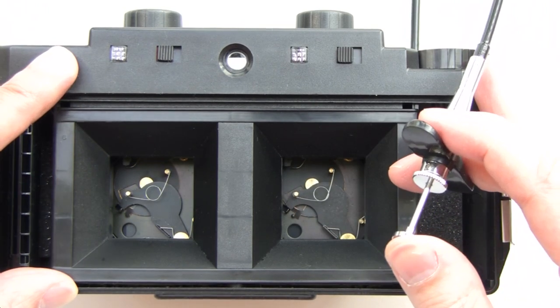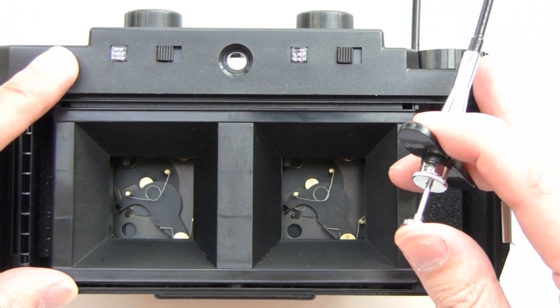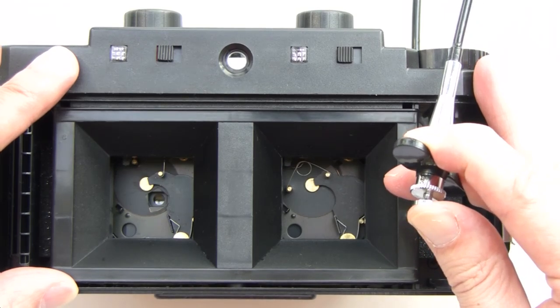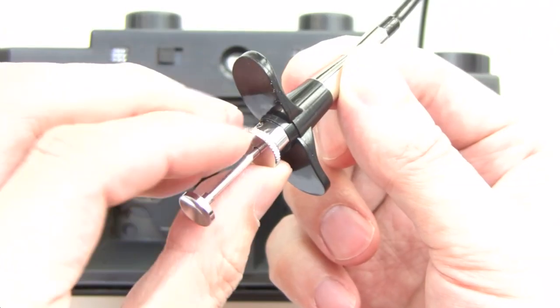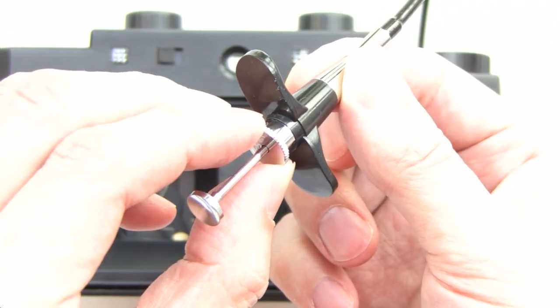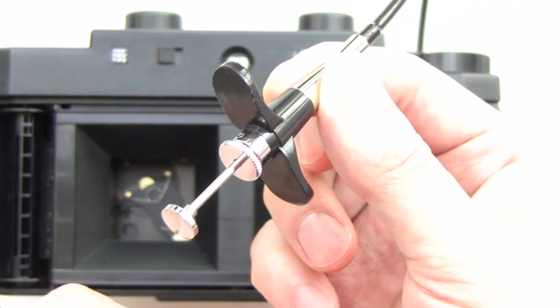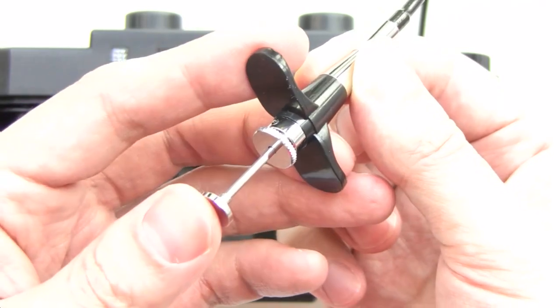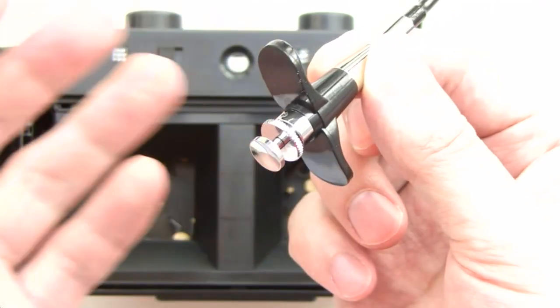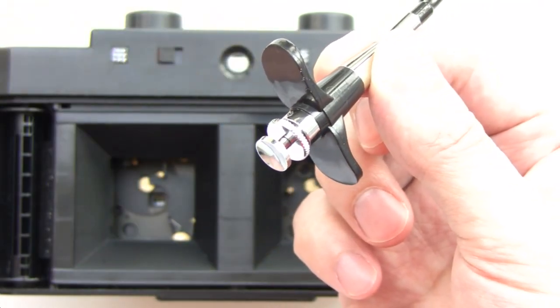Now in some cases, for extremely long exposures, I don't want to be just stood there holding this button. There is a very useful locking mechanism, and to engage that you just turn the collar here about 180 degrees and now when I press down it just stays down.